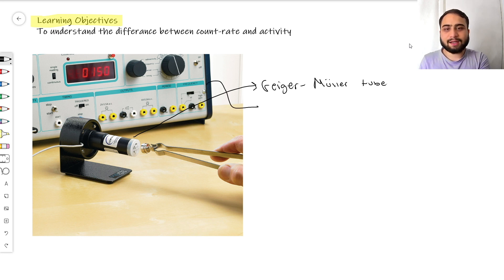These two machines used together detect and measure radiation. The tube actually does the detecting of radiation, and the counter does the measuring.